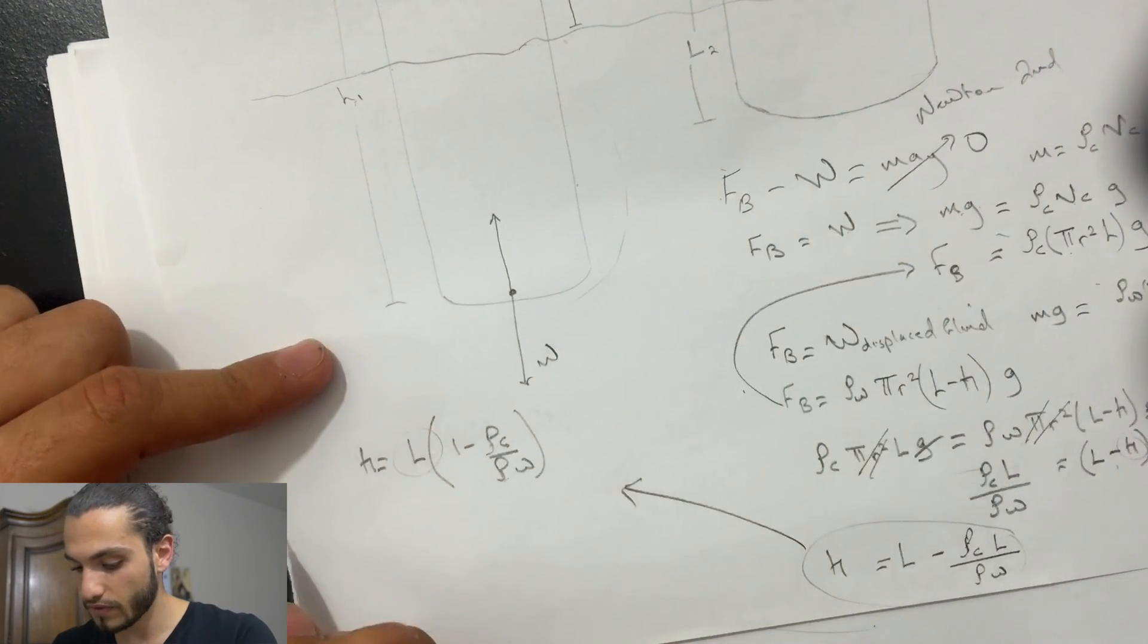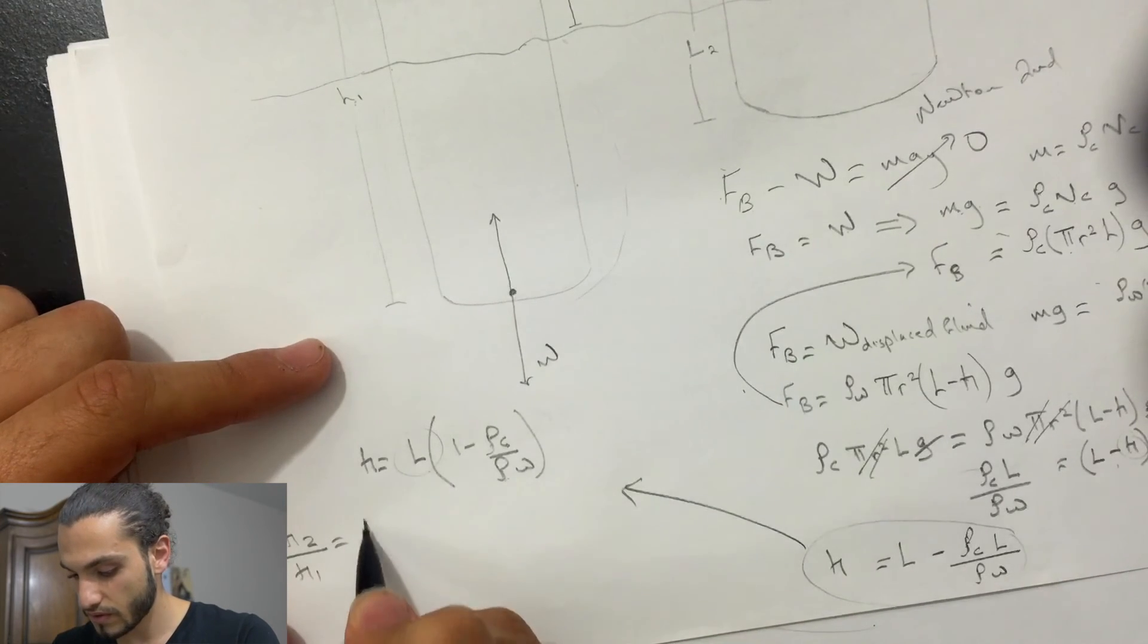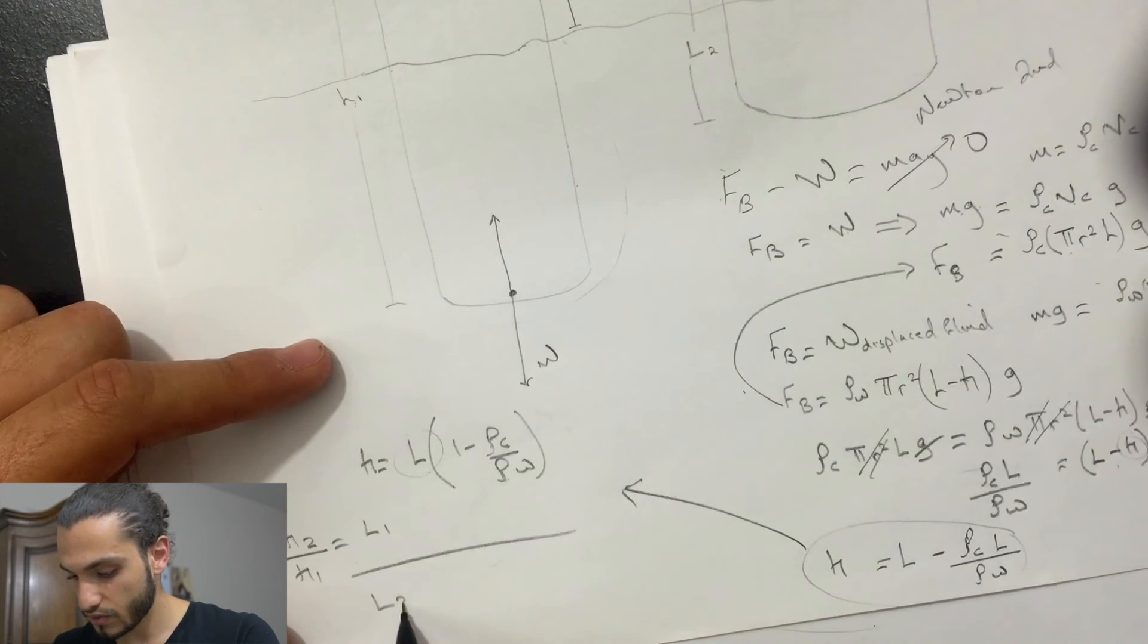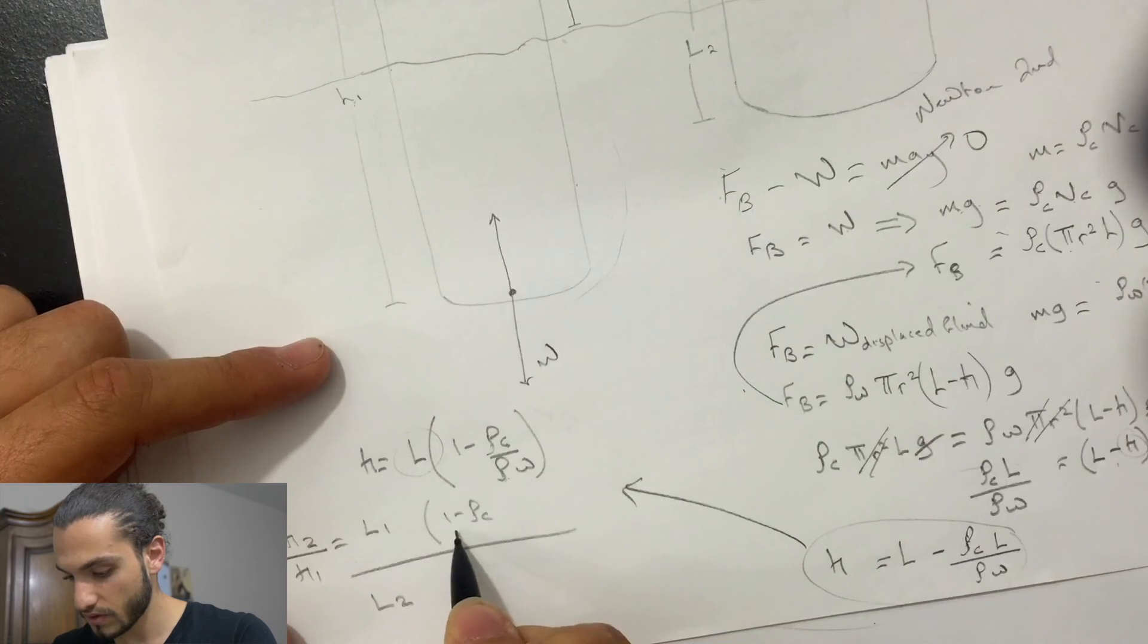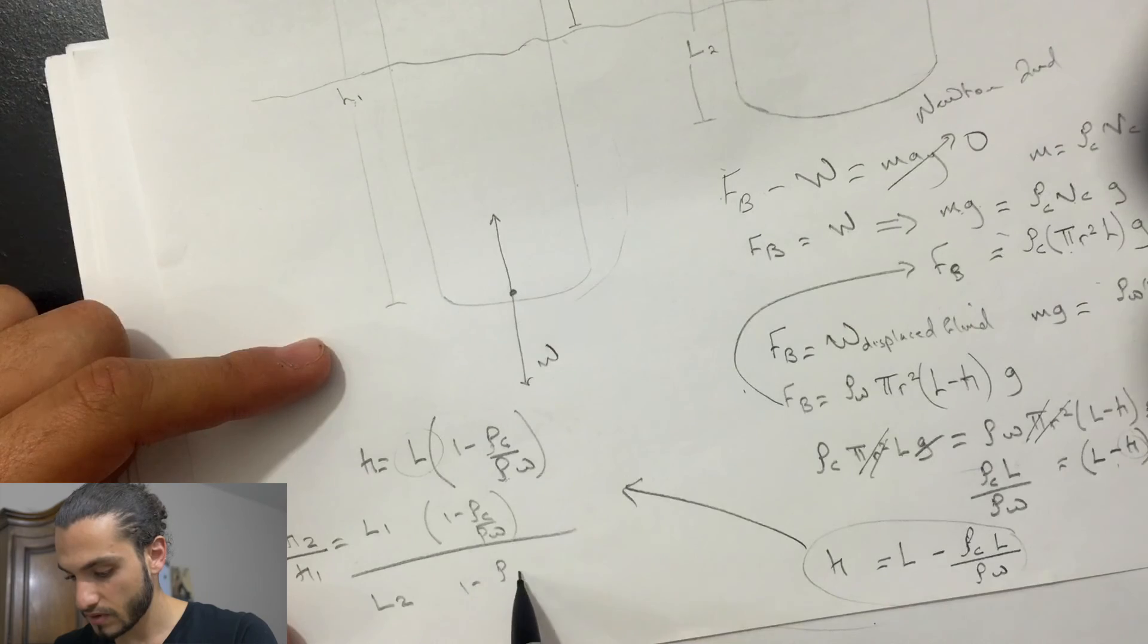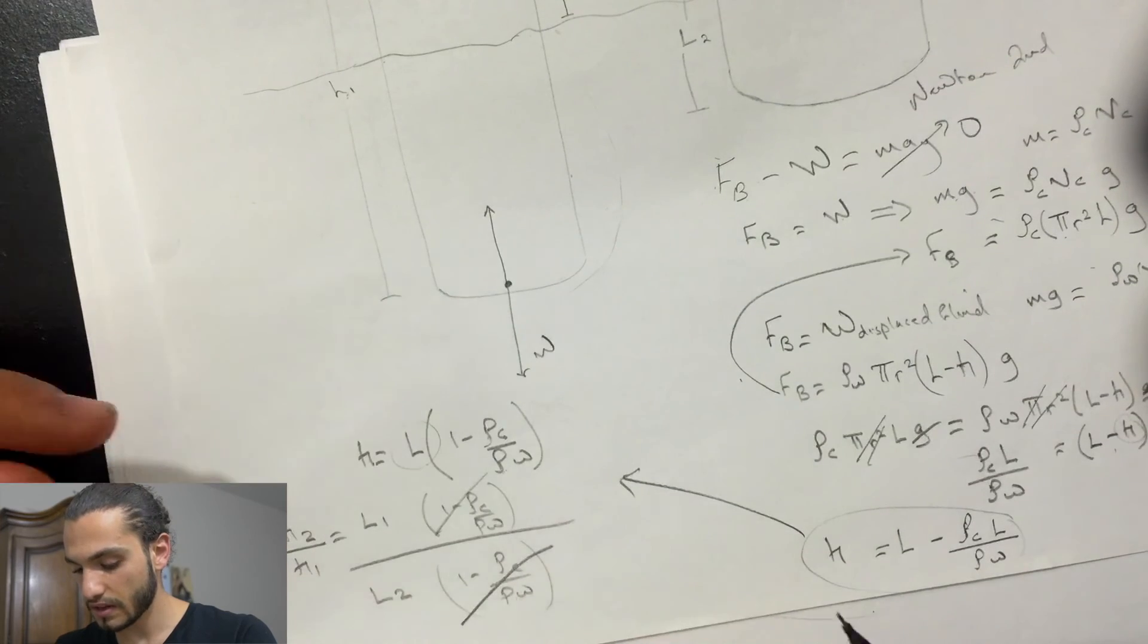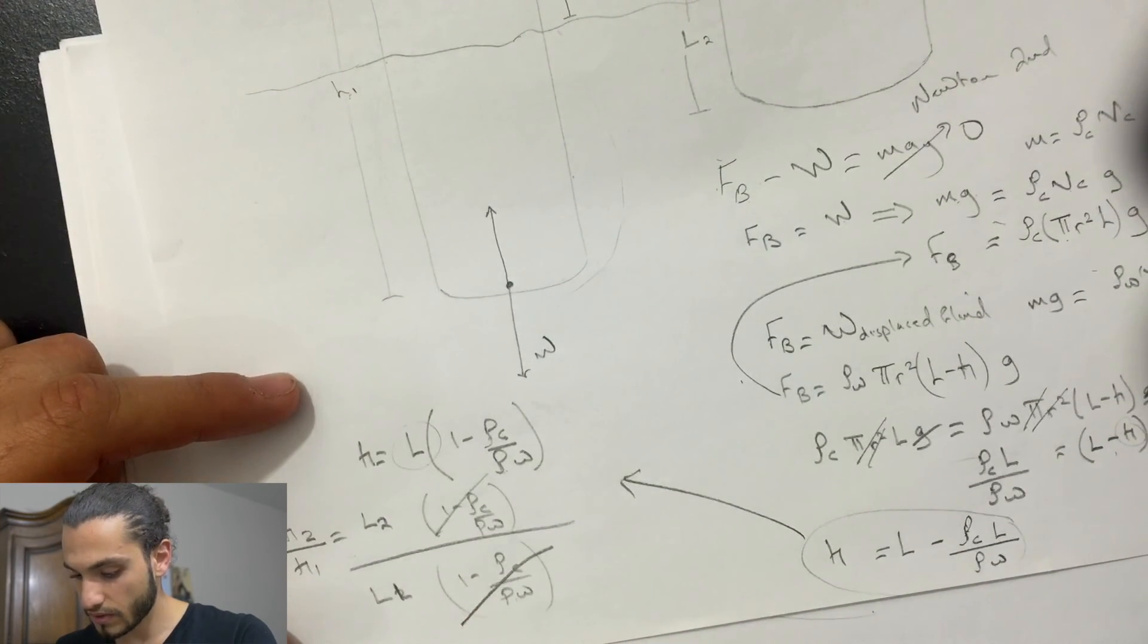Both cylinders have the same density and both of them are submerged in water, either both are floating on water. So when we divide H2 divided by H1, it's L1, L2, 1 minus rho C... though both of these are the same value, so we can take them out actually.